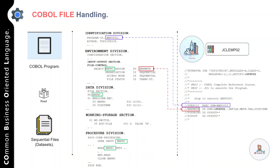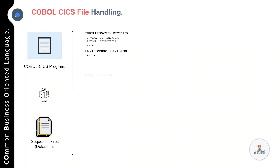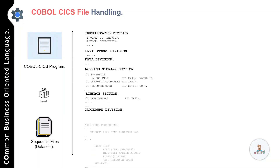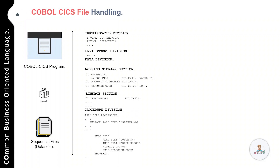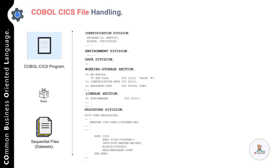Now let's move on to our next example — a COBOL CICS program, which is also reading data from a file. The program is again divided into four divisions: identification division, environment division, data division, and procedure division. The first thing you should notice is that the environment division does not include any entries, and the data division does not include a file section — because the file used in a COBOL CICS program is defined in the CICS File Control Table, or FCT.